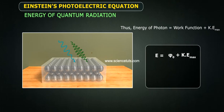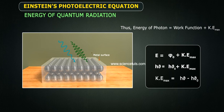E equals to φ₀, plus KE maximum. hν equals to hν₀, plus KE maximum. KE maximum equals to hν minus hν₀.